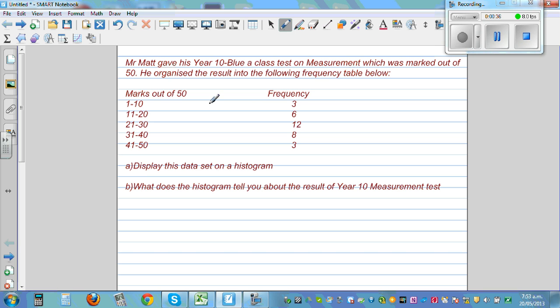There were three students who got marks between 1 to 10, six students who got marks between 11 to 20, and so on. Now marks is out of 50.